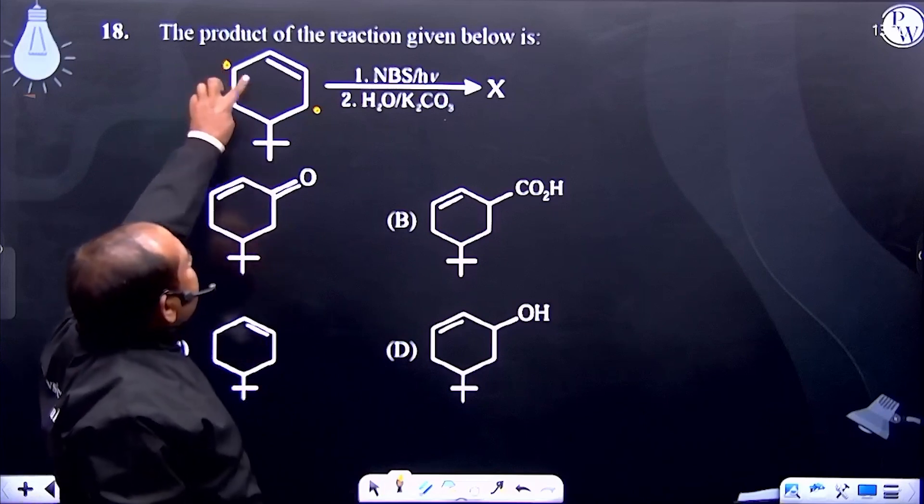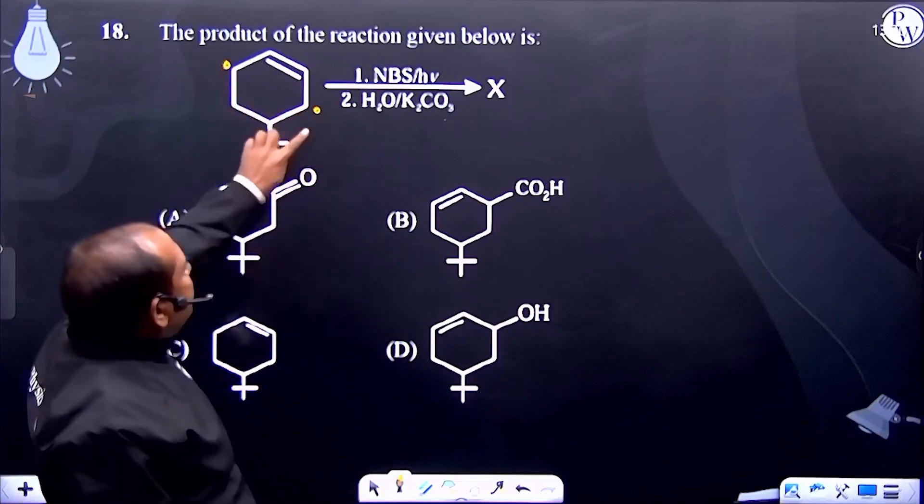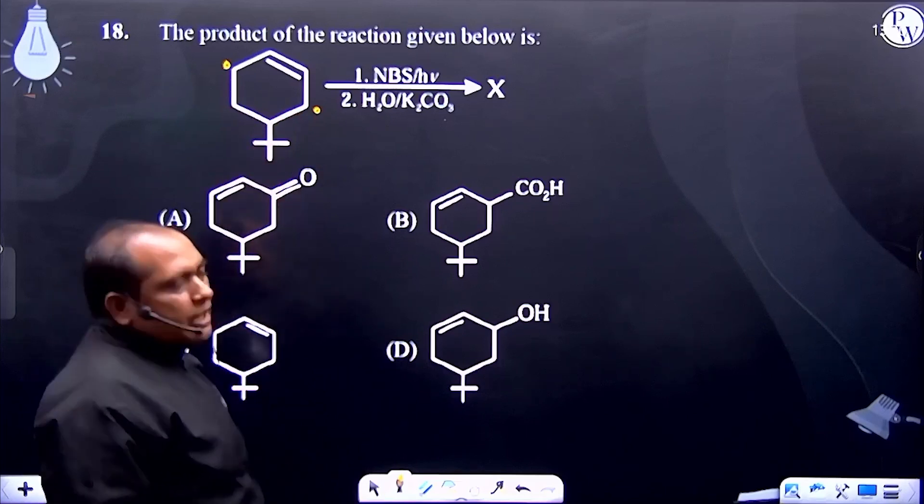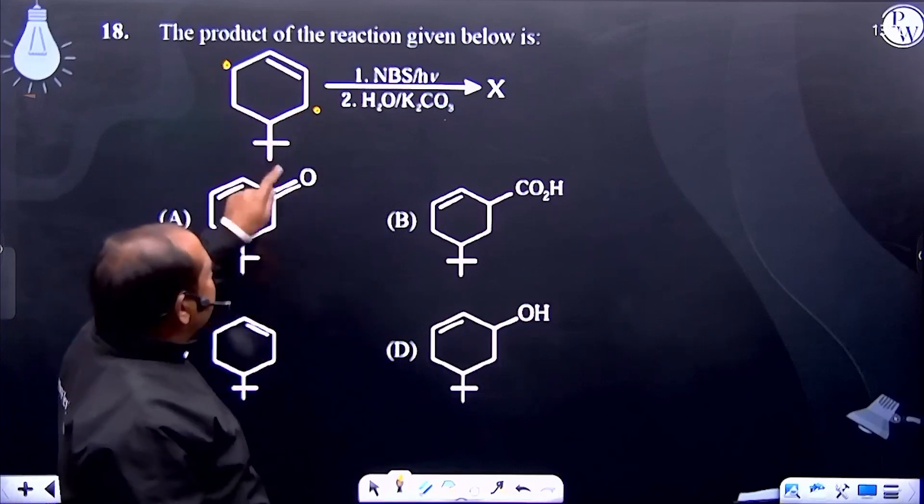This is the less hindered position. This one is more hindered position due to tert-butyl group. This is a tert-butyl group.